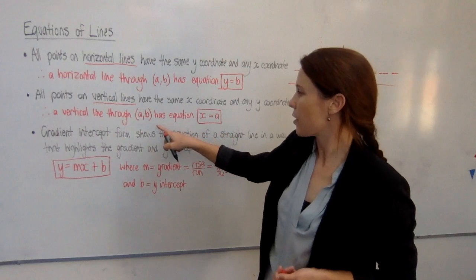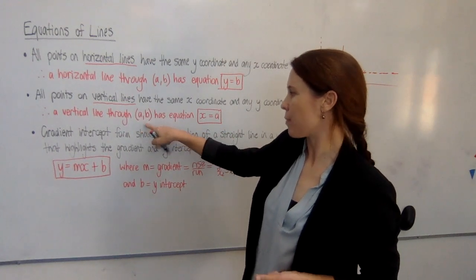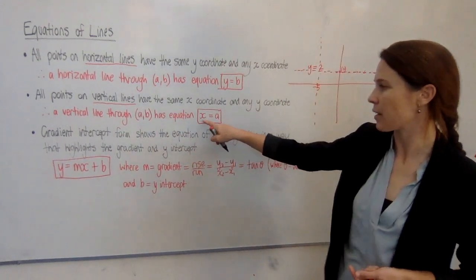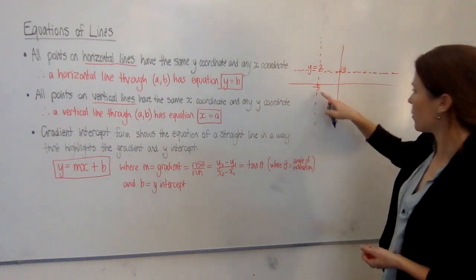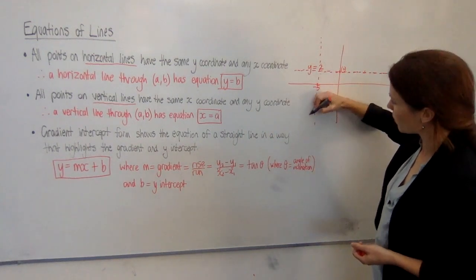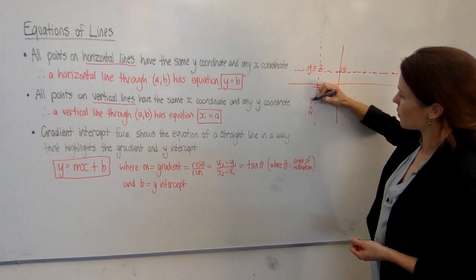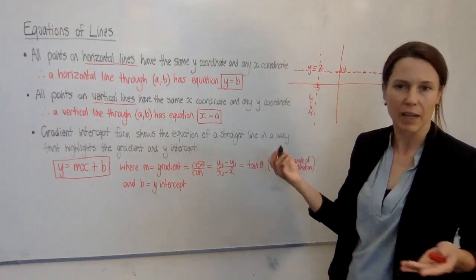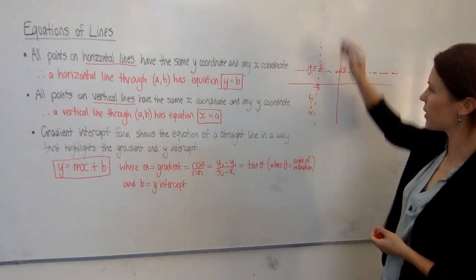So this line is going to, if it goes through some point (a,b), it will have equation x equals a. Now we know this goes through minus 5, so we call this line x equals minus 5. What does y equal? Anything at once. Okay, so we've got those.